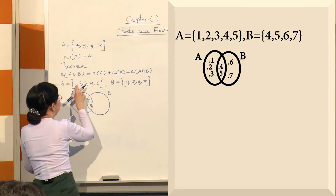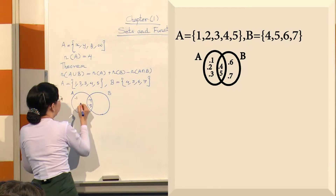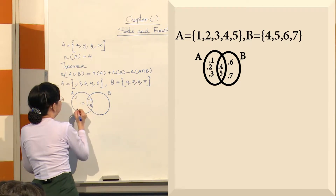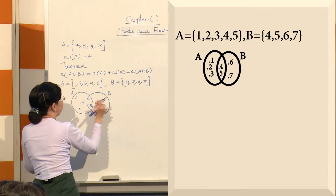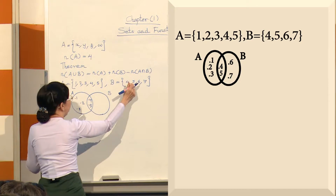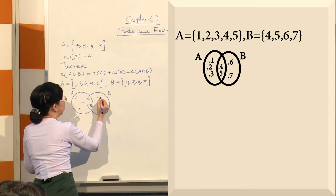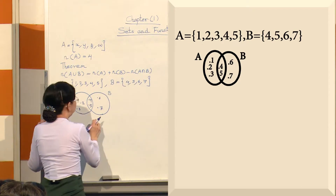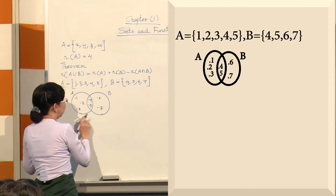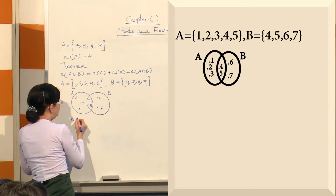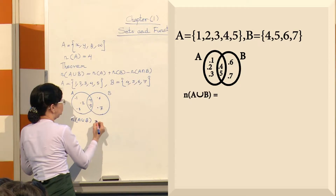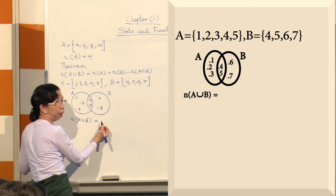Set B has elements 4, 5, 6, 7. The number of A union B is equal to — what do you want to say? 7.